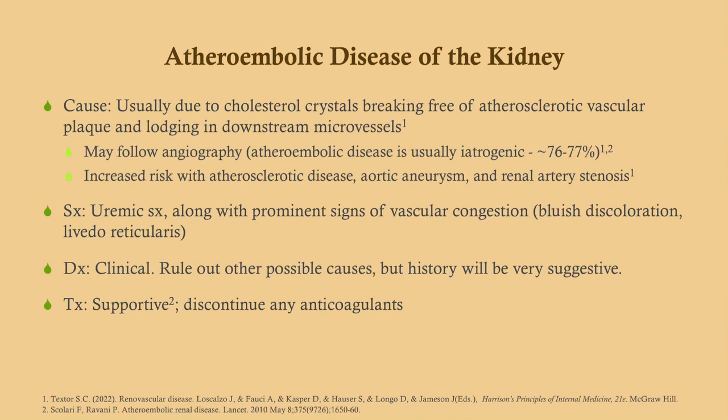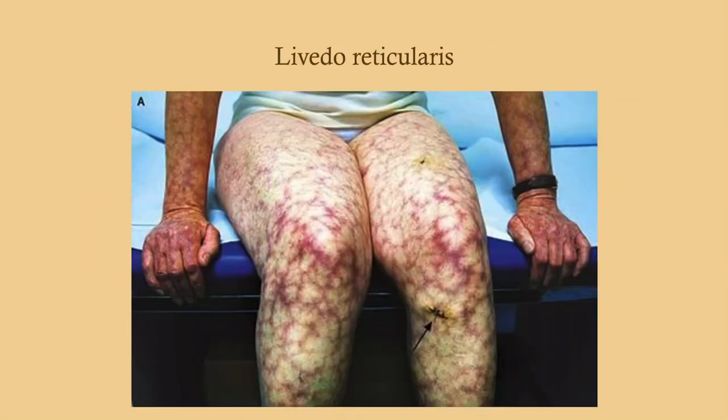Atheroembolic disease of the kidney is usually due to cholesterol crystals breaking free from plaques — look for this after angiography. Increased risk with atherosclerotic disease, aortic aneurysm, and renal artery stenosis. Symptoms are similar to other TI diseases, but patients can also have skin findings: bluish discoloration, cyanosis of digits, and livedo reticularis — that mottling pattern. Diagnosis is clinical; treatment is supportive and discontinue anticoagulants temporarily.